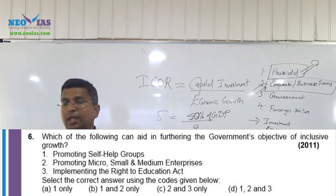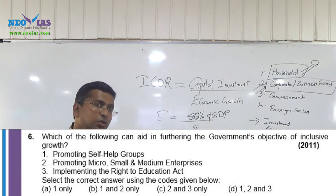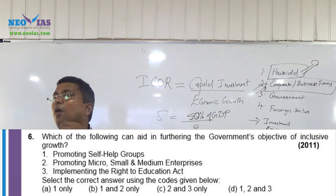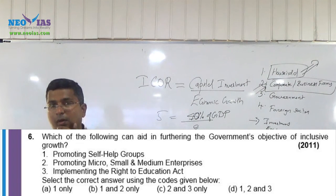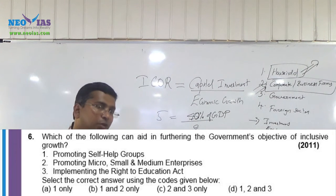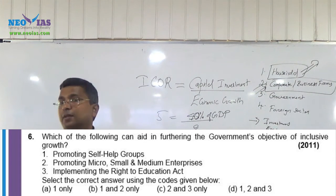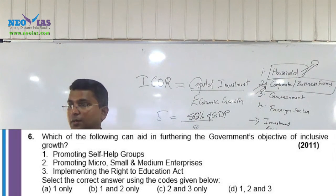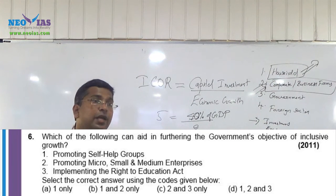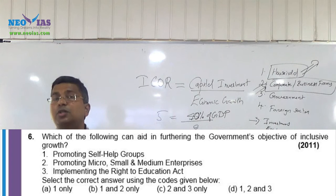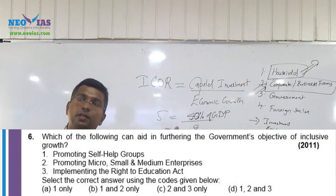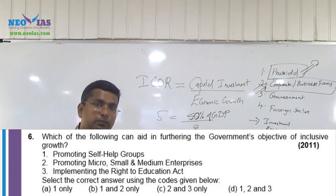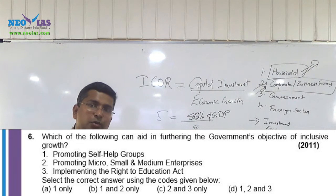Normally, providing education to children is the responsibility of the parent, and the parent should have earning income to provide that education. For poor BPL families, how can they send their children to school? They will become child labor. But effectively implementing the Right to Education Act will ensure that from these sections also, students will go and attend school — ensuring the goal of inclusive growth.